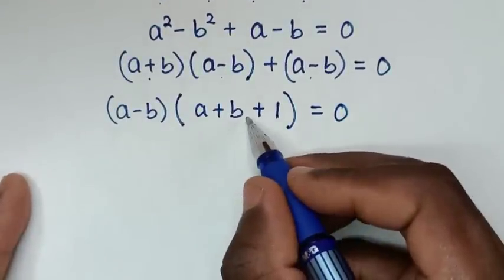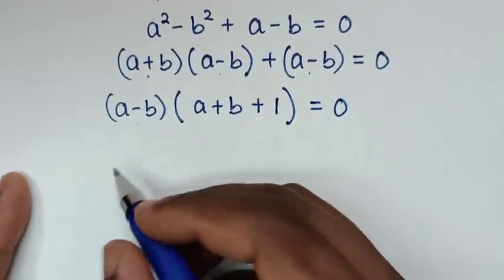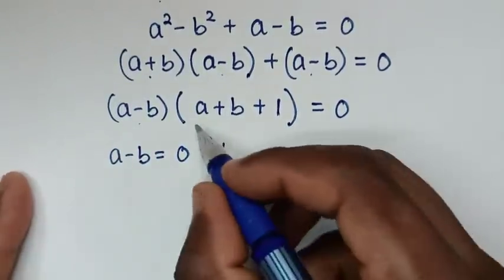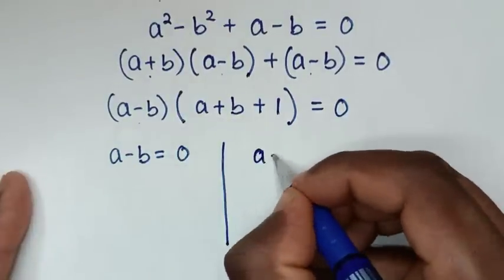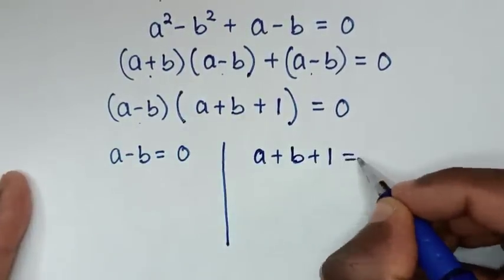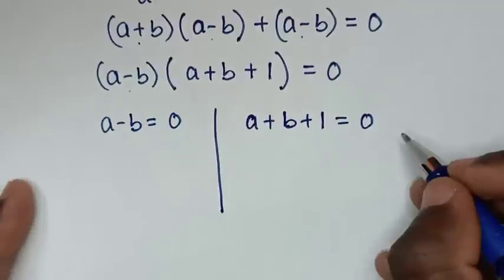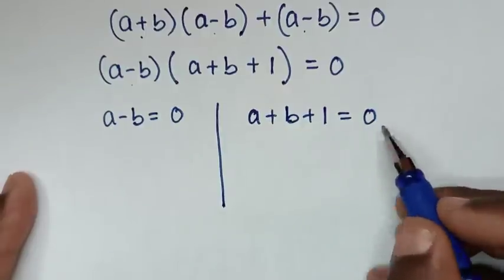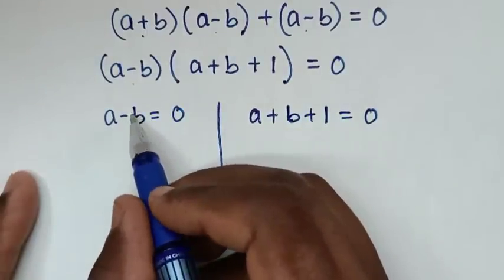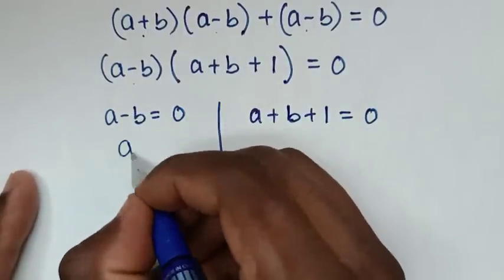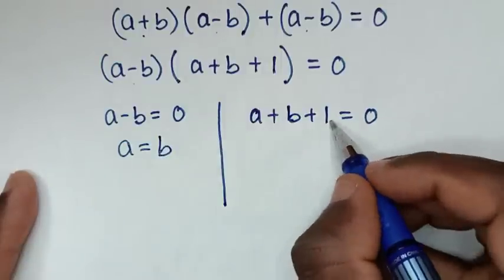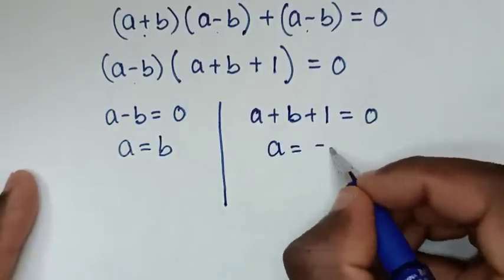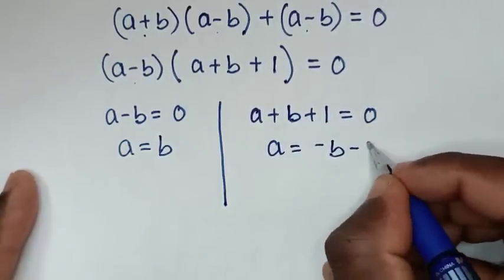From this equation, a minus b is a common factor. Taking a minus b out gives bracket a minus b bracket times bracket a plus b plus 1 bracket equals 0. This gives two solutions: the first is a minus b equals 0, and the second is a plus b plus 1 equals 0. Making a the subject: from the first, a equals b; from the second, a equals negative b minus 1.